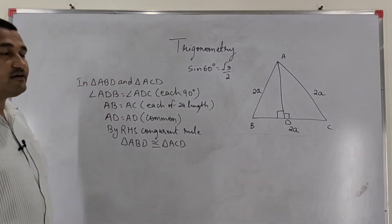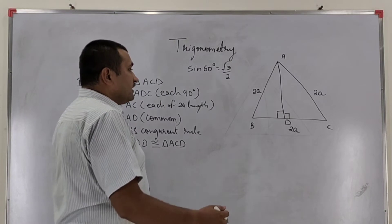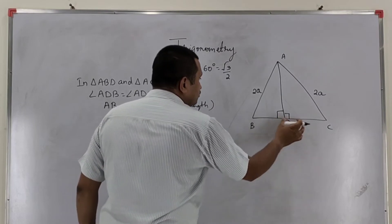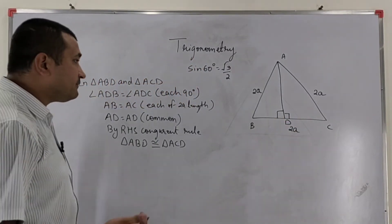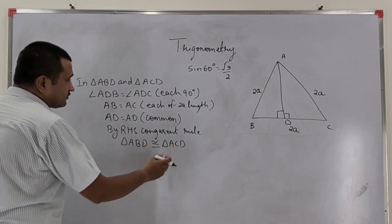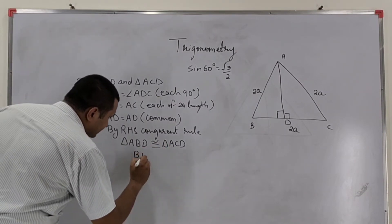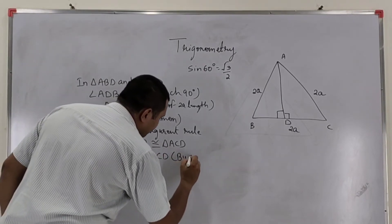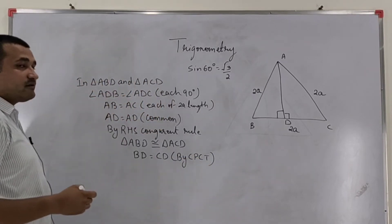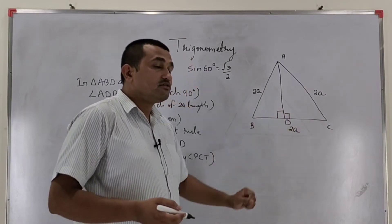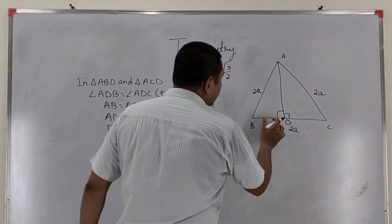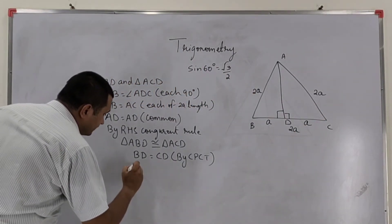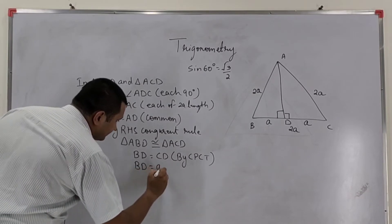Now as triangle ABD and triangle ACD are congruent, one more thing follows: as these two triangles are congruent, so since BC is of total length 2A, the two parts BD and CD will be equal. So here, by CPCT, BD equals CD. As these two triangles are congruent, so as the total is 2A, this part BD will be of length A, and this part CD will also be of length A. So BD equals A.